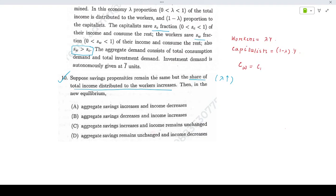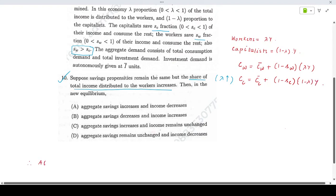Given a demand determined economy, the consumption function of the workers would be the autonomous component 1 minus SW, which is the marginal propensity to consume, times lambda Y. And the consumption function for the capitalists would be the autonomous component times 1 minus SC into 1 minus lambda Y. Therefore, at equilibrium,